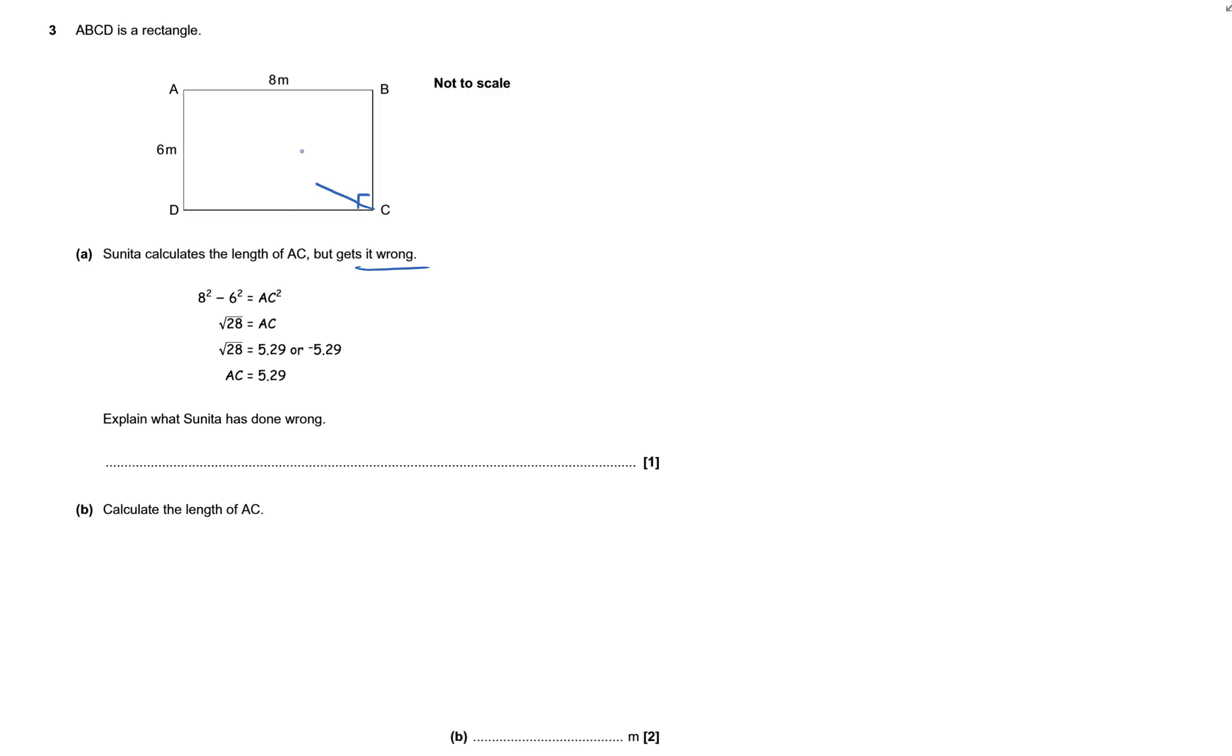The length of AC—that's 6 and 8. I can see what she's done wrong. She's after the long side, and yet she's done a subtraction. It should have been 8² + 6².